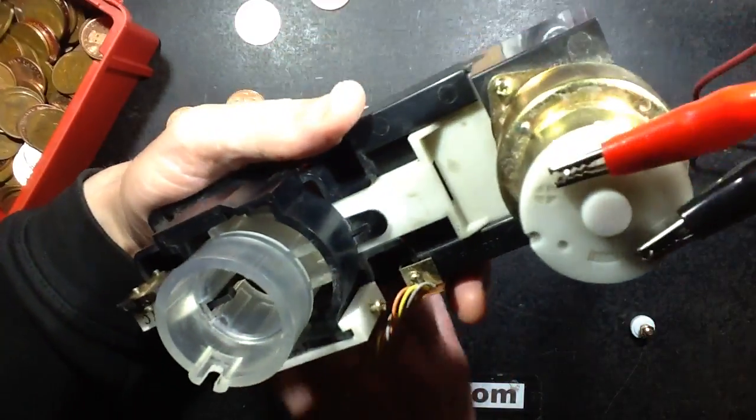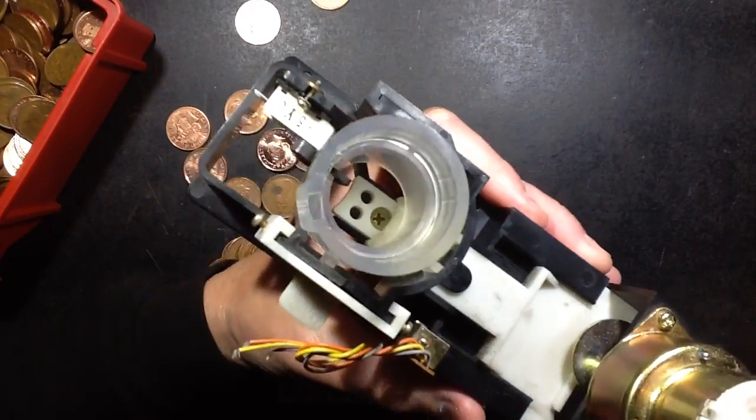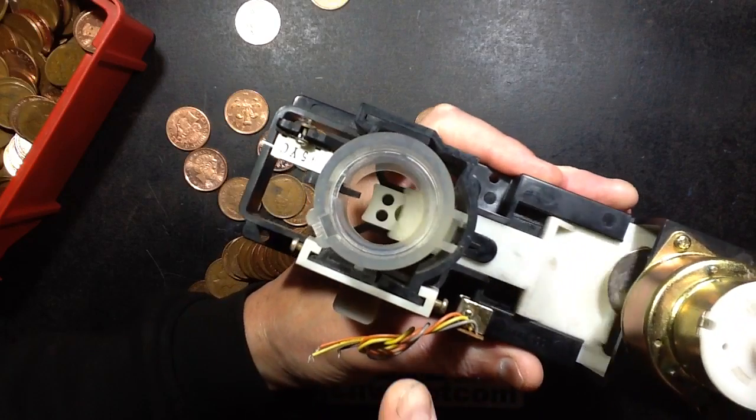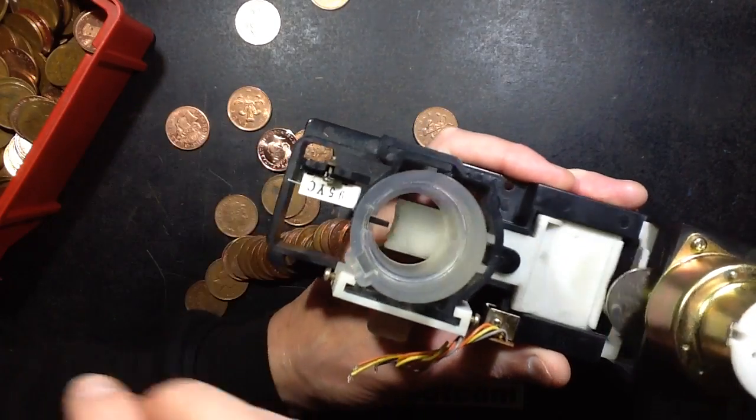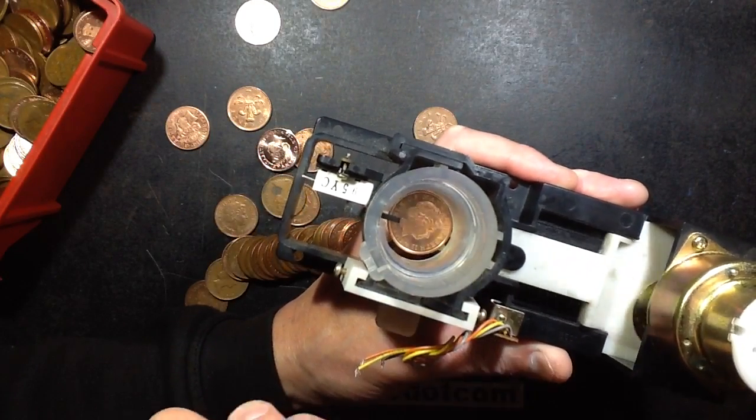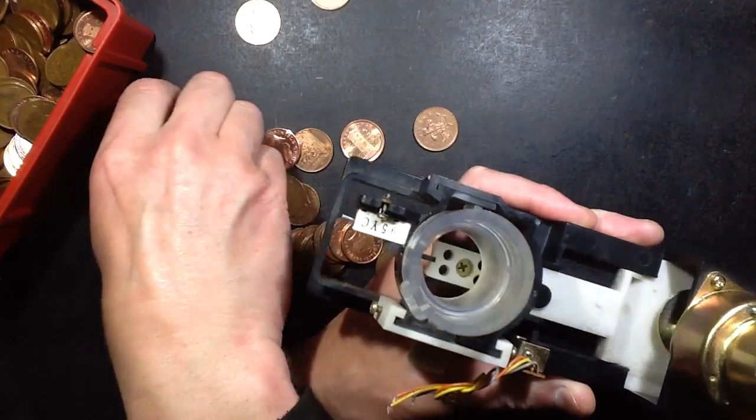So if I take this money out and power it up again you'll see that there's the mechanism there going backwards and forwards and it just pushes out one coin at a time.